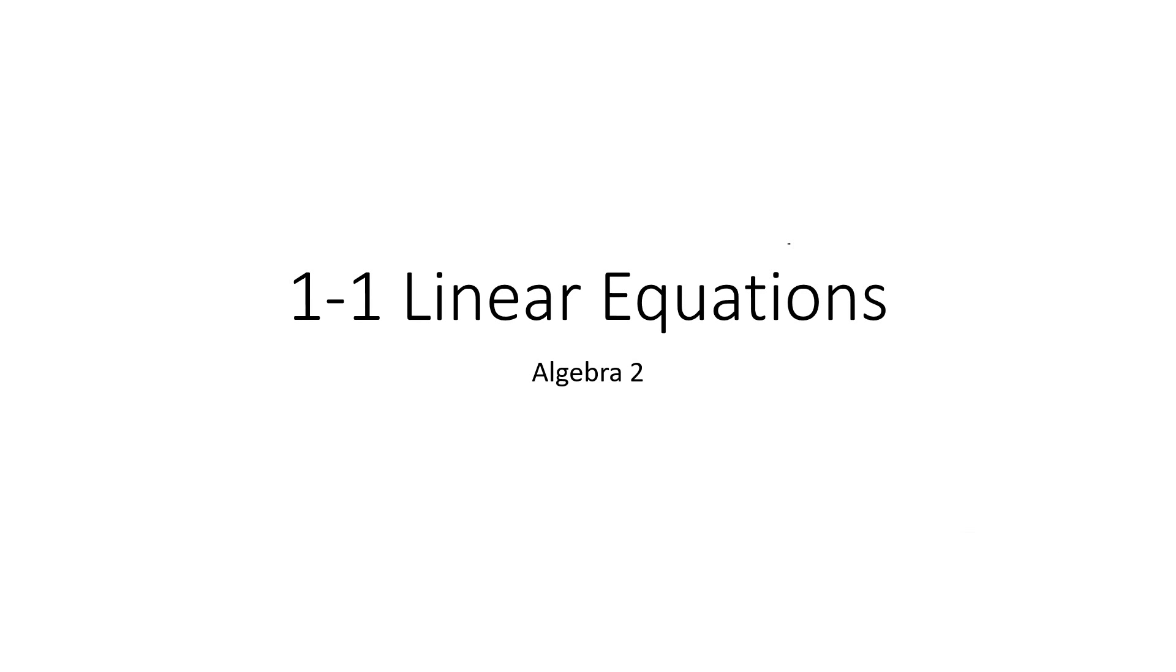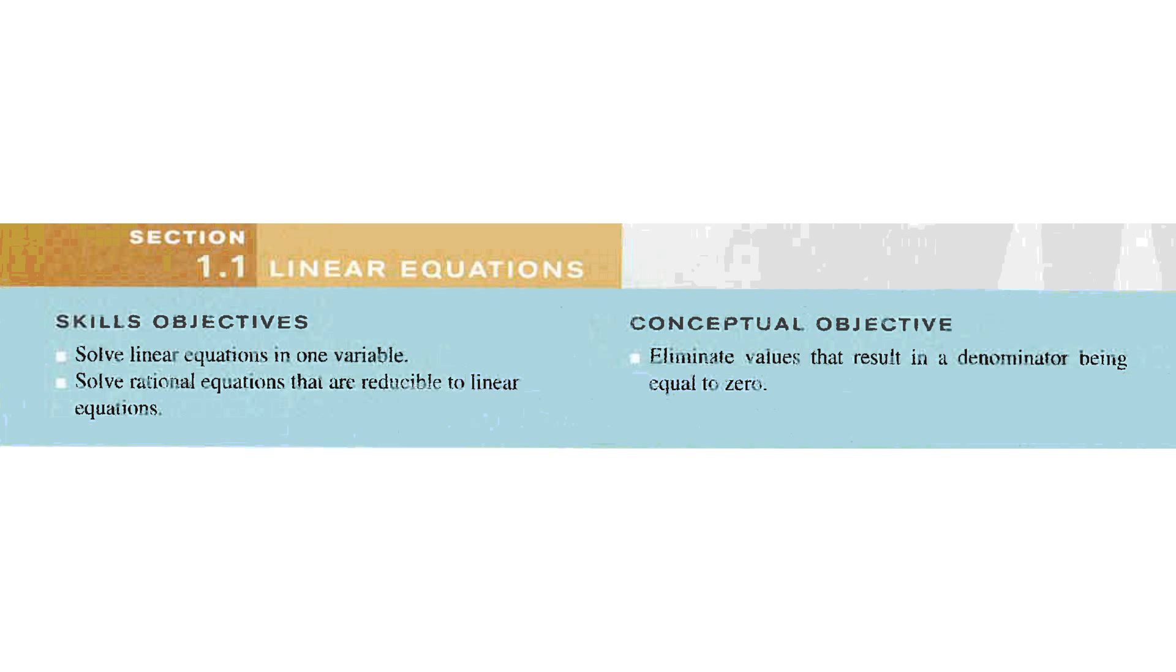Okay, let's get started with Chapter 1, Section 1, Linear Equations. So what are we up to? We're going to solve linear equations in one variable and solve rational equations that are reducible to linear equations. Remember, rational equations are things that have variables in the denominator, like 5 over x. And we do need to eliminate values that result in a denominator being equal to 0. These are things that are going to be called extraneous solution, and extraneous might only have one in it. Let's find out in a little bit.